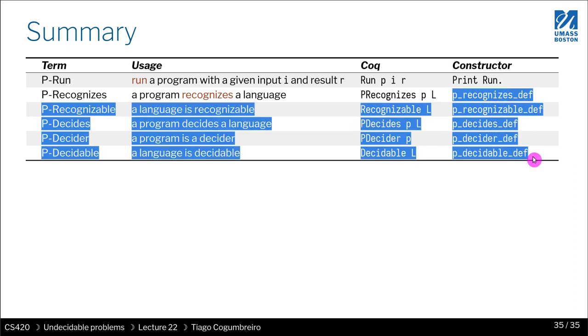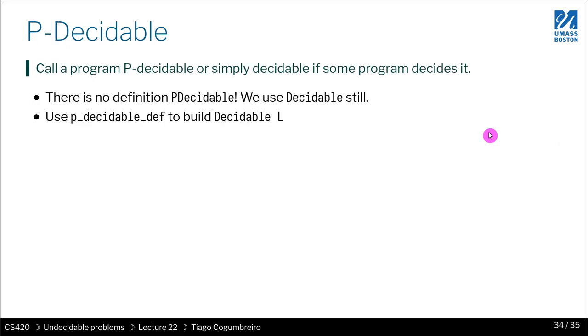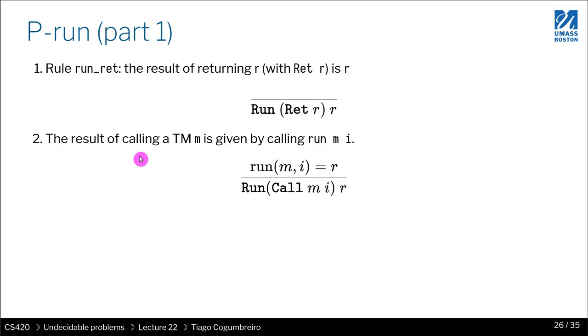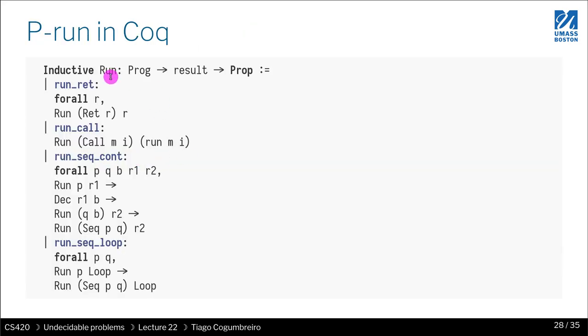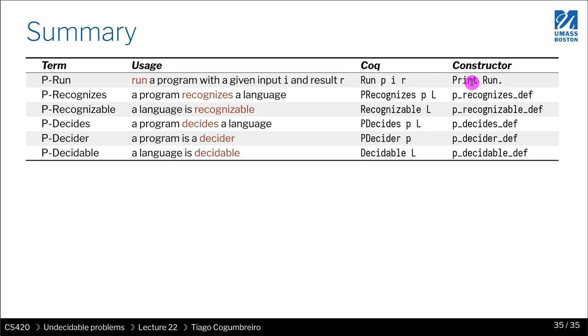You have constructors for all of this. For running, you actually have constructors. I recommend you print run or remember these rules, which are explained in the previous slides. These are the four ways you can use to construct a run object - the constructors. In the next video, we're going to go through a few examples, and then we're going to go through the exercises of the homework. See you next time.